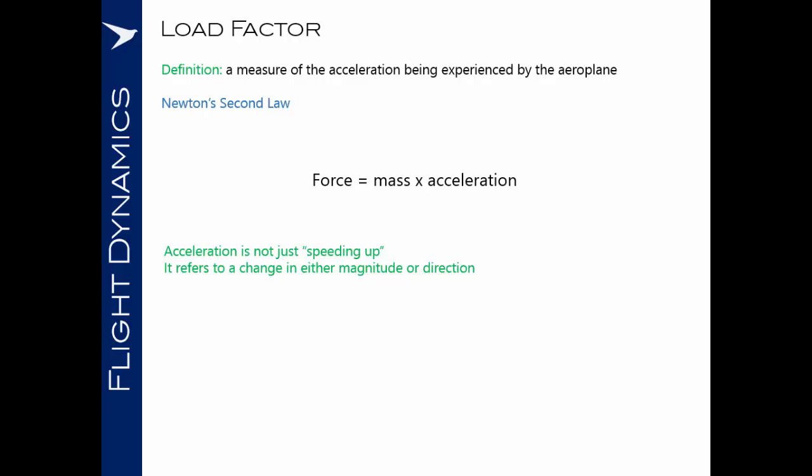So therefore, we may have a speed constant, but we're turning. And in that case, the aircraft is accelerating in the direction. For ease, we refer to the force exerted by gravity as G. And the acceleration that we feel by gravity is equivalent to 9.81 meters per second squared.